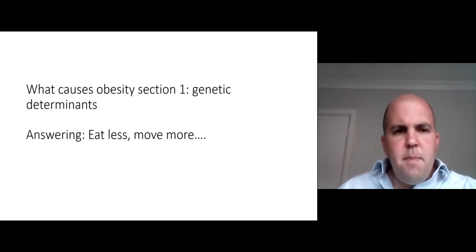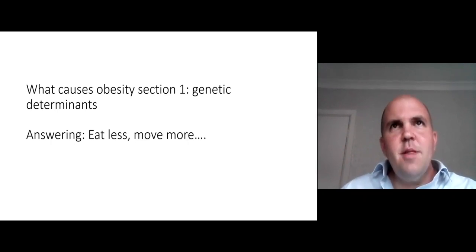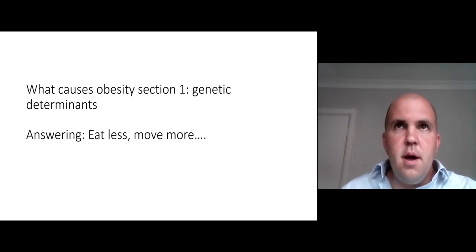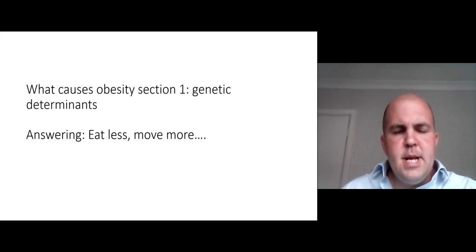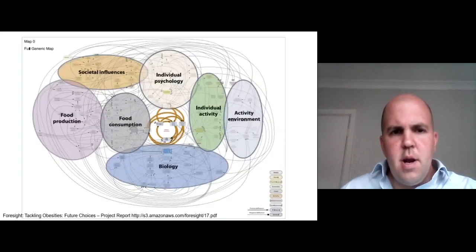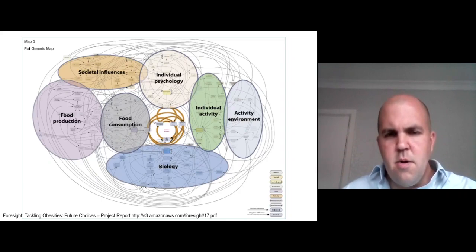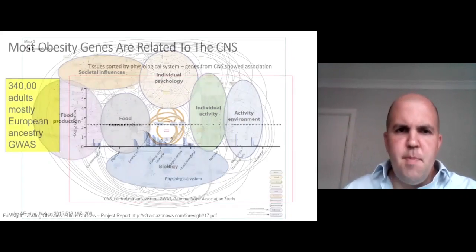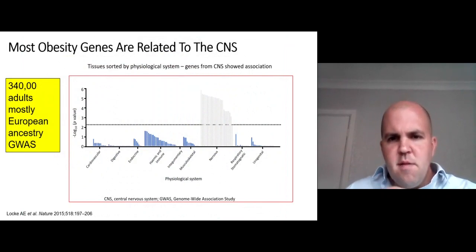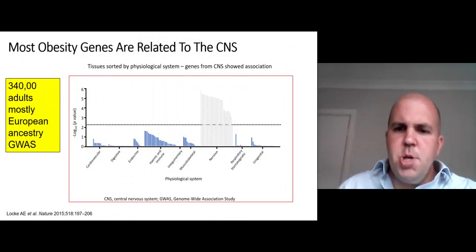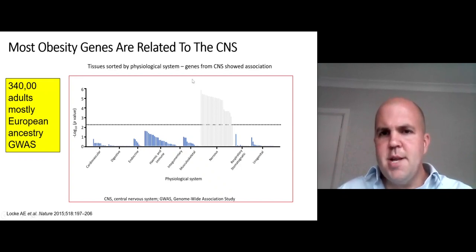We need to think about the causes of obesity, addressing the unhelpful and harmful rhetoric of 'eat less, move more.' Looking at genetics and biology, this is from the Foresight report, put together by around 300 experts. Focusing on the biology section and specifically genes, many genes associated with obesity are located within the central nervous system — the brain — which is a major determinant of appetite and energy regulation.